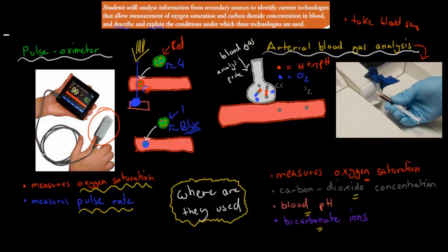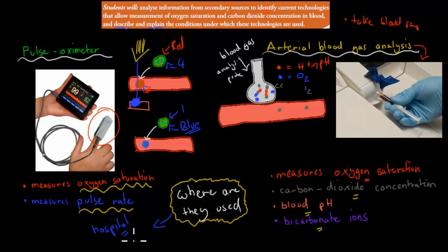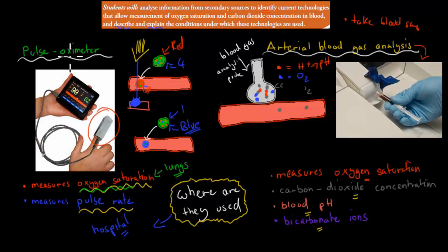Now we need to describe and explain the conditions under which these technologies are used. Pulse oximeters are often used in hospital settings — for example, if you go for surgery, if you're not feeling well, or if you have an asthma attack and go to hospital, you might be given one of those clips. It's used when nothing is too serious — they can monitor your oxygen saturation levels to get a good indication of how well your lungs are functioning. It's used for early detection and routine monitoring.